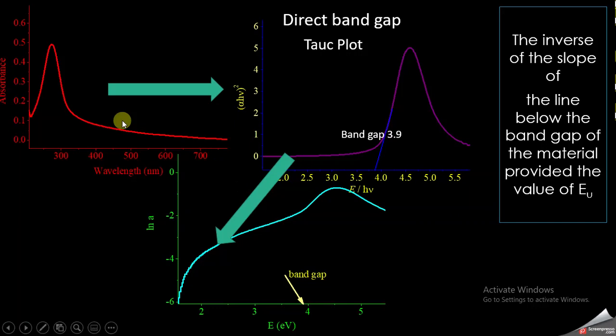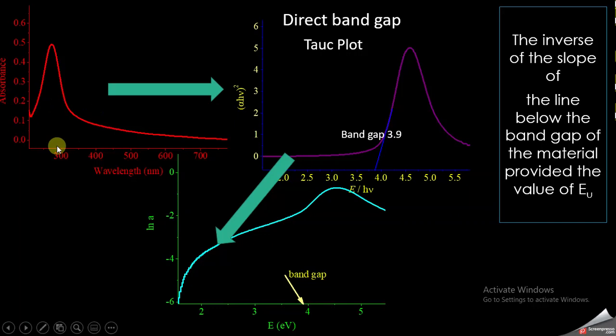Let's suppose we have the electronic absorption spectrum of some semiconductor oxide material, with absorbance on the y-axis and wavelength in nanometers on the x-axis. As discussed in another video, we can use this data to find the band gap of the material by plotting (αhν)² versus energy in electron volts on the x-axis. The values of energy and (αhν)² are obtained from the absorbance and wavelength data.